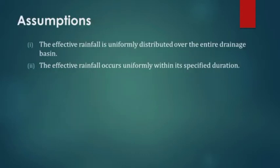Now, the assumptions of unit hydrograph theory. There are five assumptions. First assumption: the effective rainfall is uniformly distributed over the entire drainage basin. Second assumption: the effective rainfall occurs uniformly within its specific duration — meaning the rainfall intensity is constant throughout that duration.